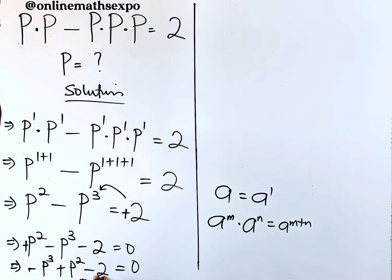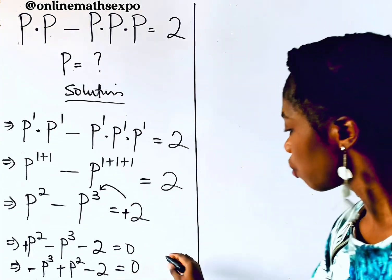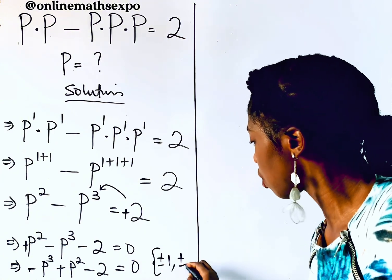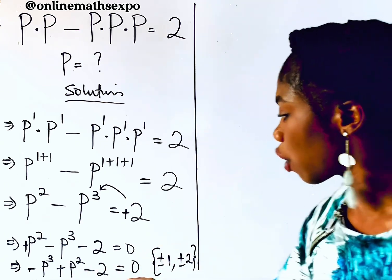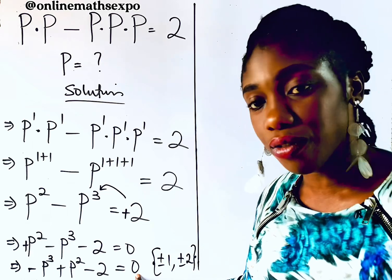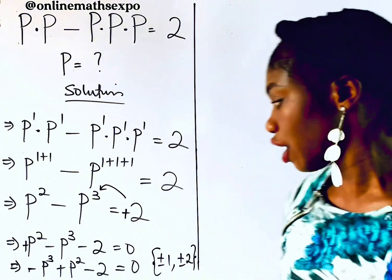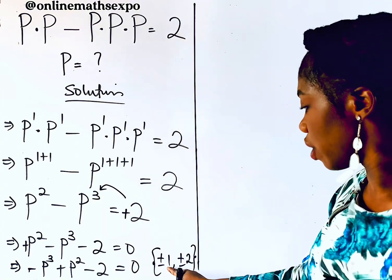At this point we use the factors of the constant 2 and substitute by trial and error. For the number 2, we can use plus or minus 1, or plus or minus 2. We plug each value in for p to check which gives zero — whichever does becomes a factor.